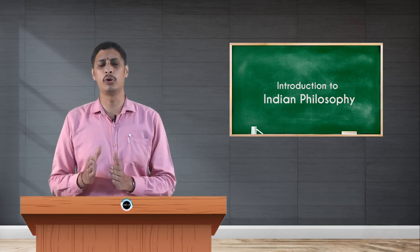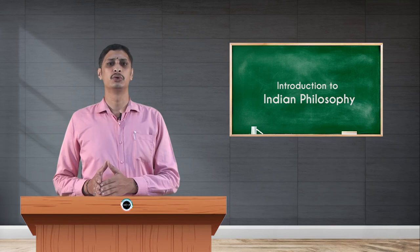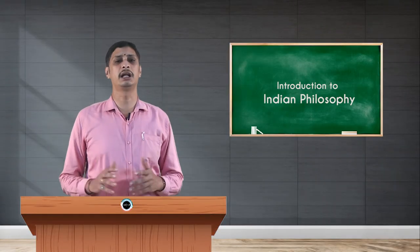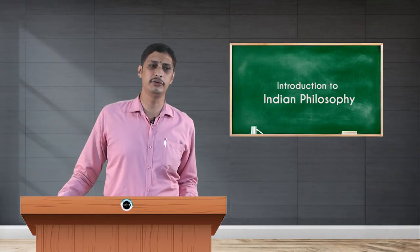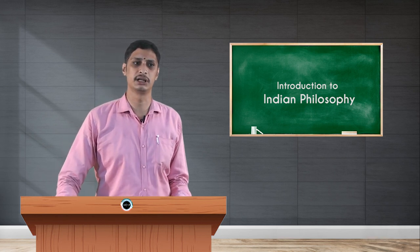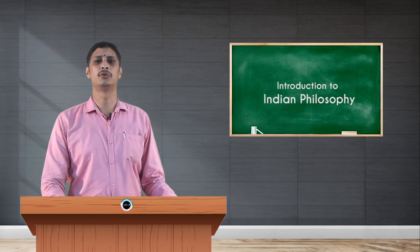These Nasthika Darsanas also have significant input on Indian philosophical values. The six Asthika plus three Nasthika philosophies form the basis of Indian philosophical thought. Asthika Darsanas have strong belief in the existence of Vedas, Atma, Paramatma, Jnana, Ajnana, Janana, Marana, and Moksha. They believe the body and soul are separate and accept the existence of Ishwara.